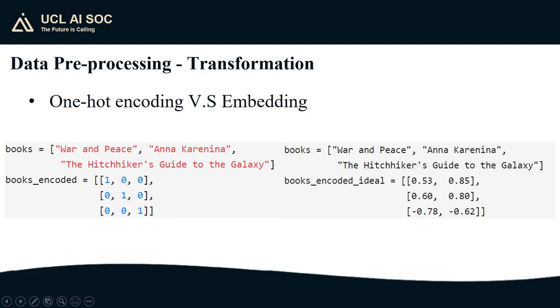So on the right, we can see the embedding approach. The embedding approach assigns to each of the books a real-valued vector such as 0.53 and 0.85 to War and Peace with some promise of what the entries of those vectors mean. For example, in the context of natural language processing, it is often the case that these vectors have some semantic connotation such that if I want to see if two words are similar, I can check whether the two vectors that represent those words are close in the vector sense.